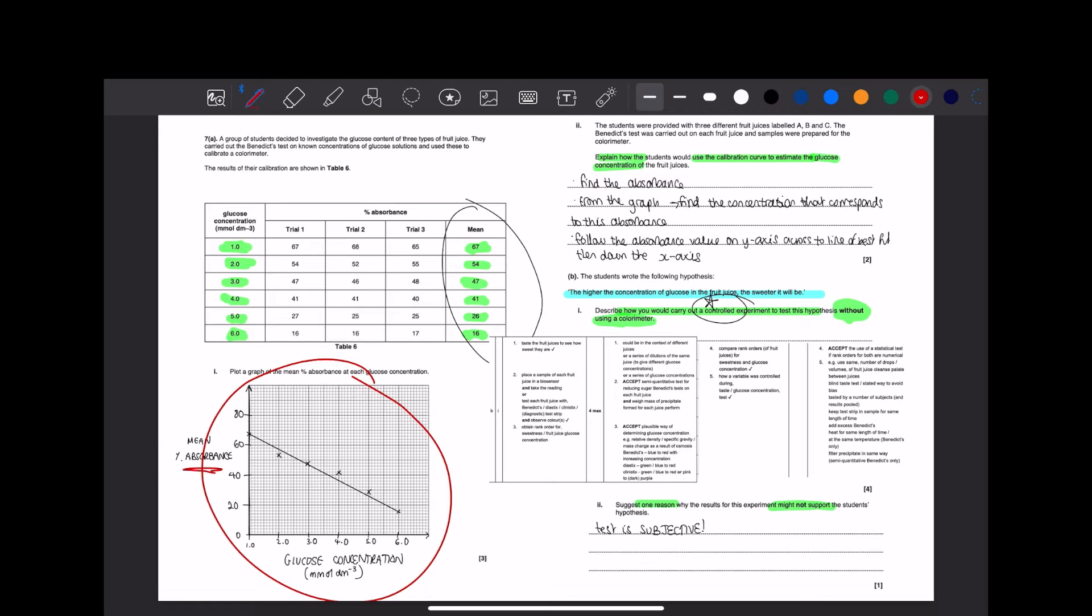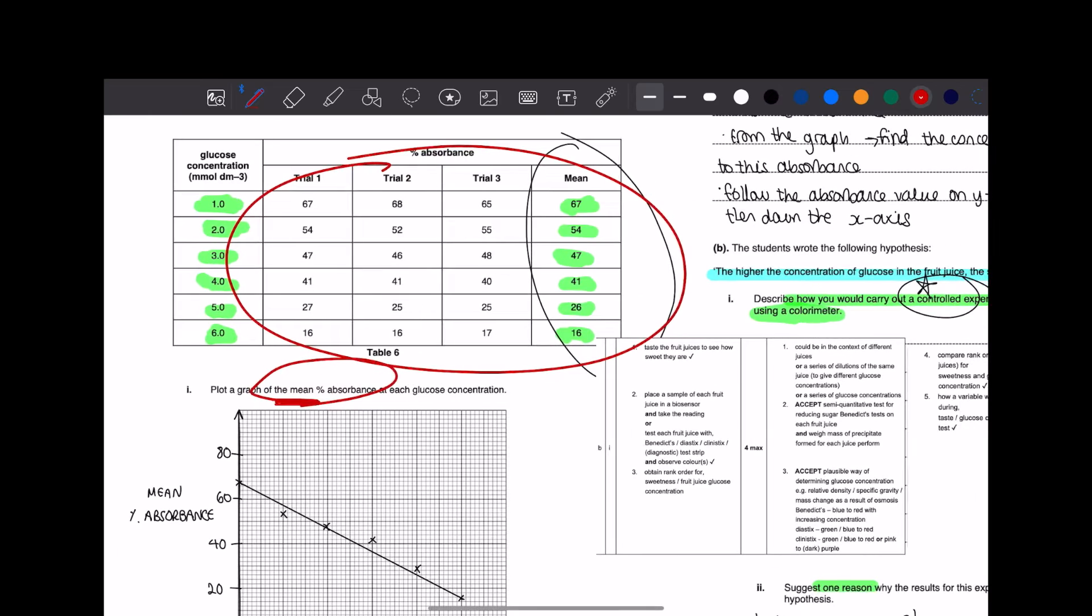Make sure you've labeled your axes properly. For this question, you might be thinking which one do I plot? Well, they told you it was mean percentage of absorbance. Just because it's three trials doesn't mean it's one of them. It's always going to be the mean that you plot. That's why there's normally a section for that on the table.